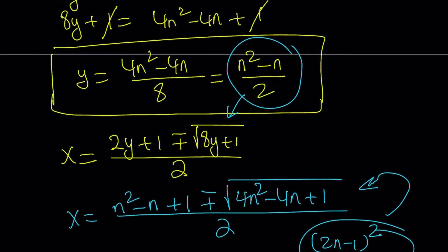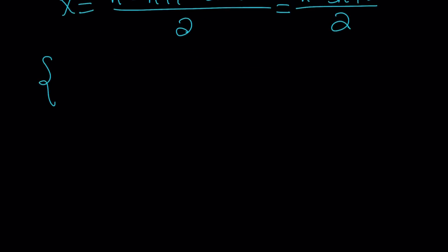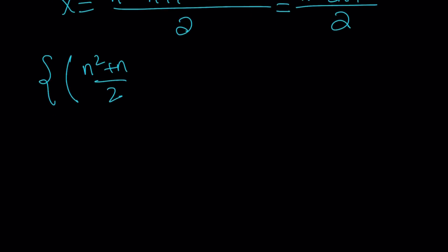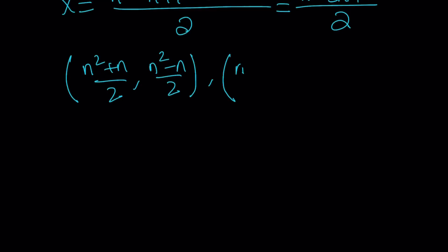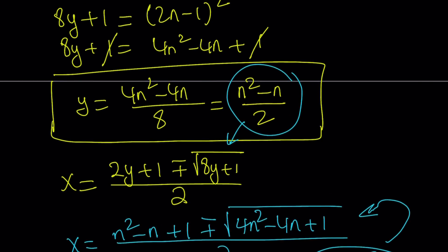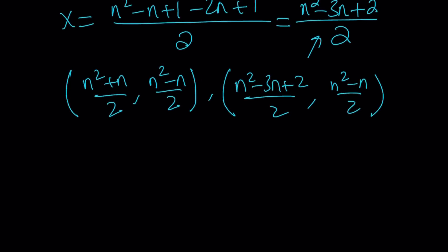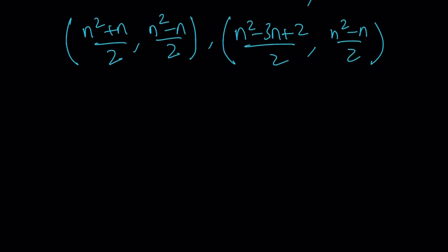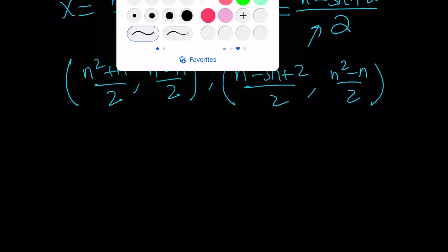Since we got a single y value for these two x values, let's write the results as two ordered pairs. On one hand, we have x equals (n squared plus n)/2 with y equals (n squared minus n)/2. On the other hand, we have x equals (n squared minus 3n plus 2)/2 with the same y value. That's why it's quadratic — we get two different x solutions. You'll notice there's an overlap between the solutions if you plug in specific numbers. That brings us to the end of the first method.